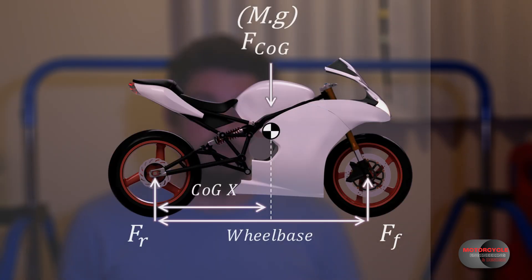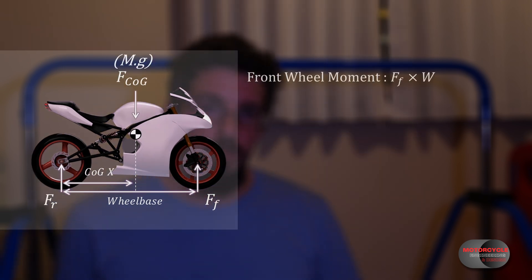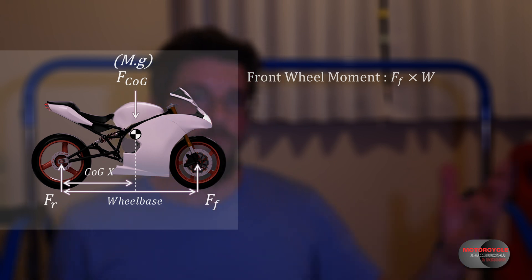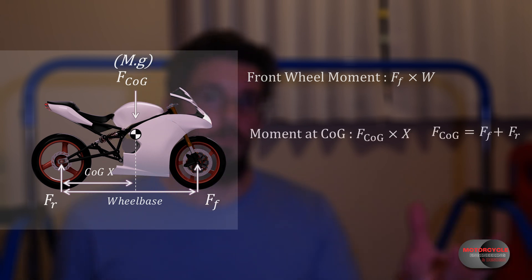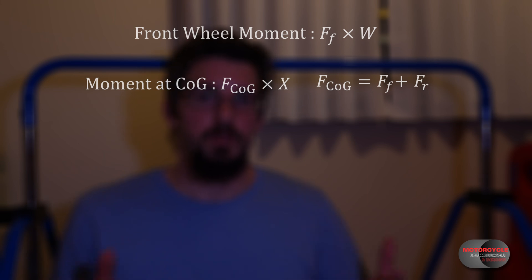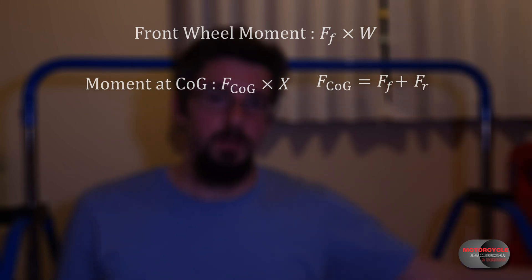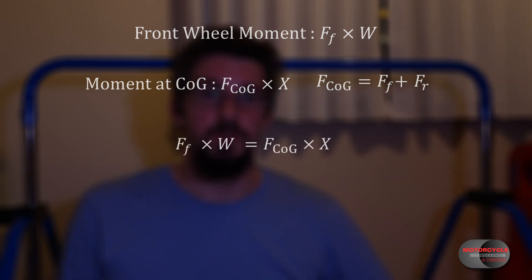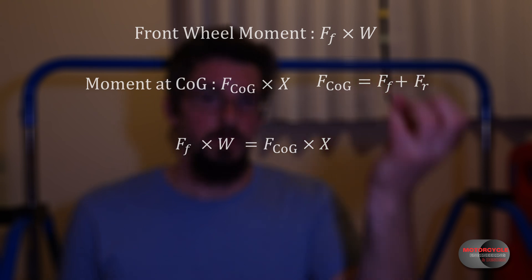Let's start with the calculation for the x position of the center of gravity. There was one unnecessary step I'd like to clear up. We have Fr, which is the force on the rear, plus Ff, which is the force on the front — add those together and we get the total weight of the bike. If we take moments around the rear wheel, we take the force on the front wheel times the distance, which is the wheelbase — Ff times W — and that has to equal the full weight of the motorcycle times the x position.